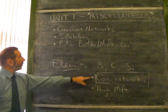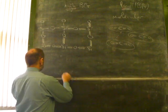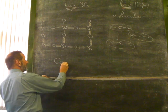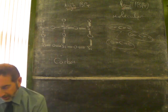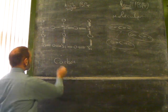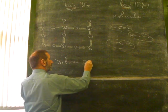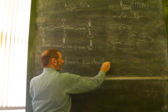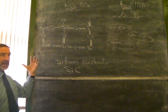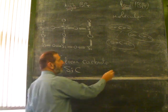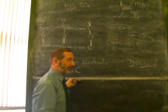While we're on the theme of covalent networks, there's another one that you might come across. And it's silicon carbide. Now, that's a combination of silicon and carbon. Once again, to understand silicon carbide, we can maybe compare it with something that we do know. And that is diamond.